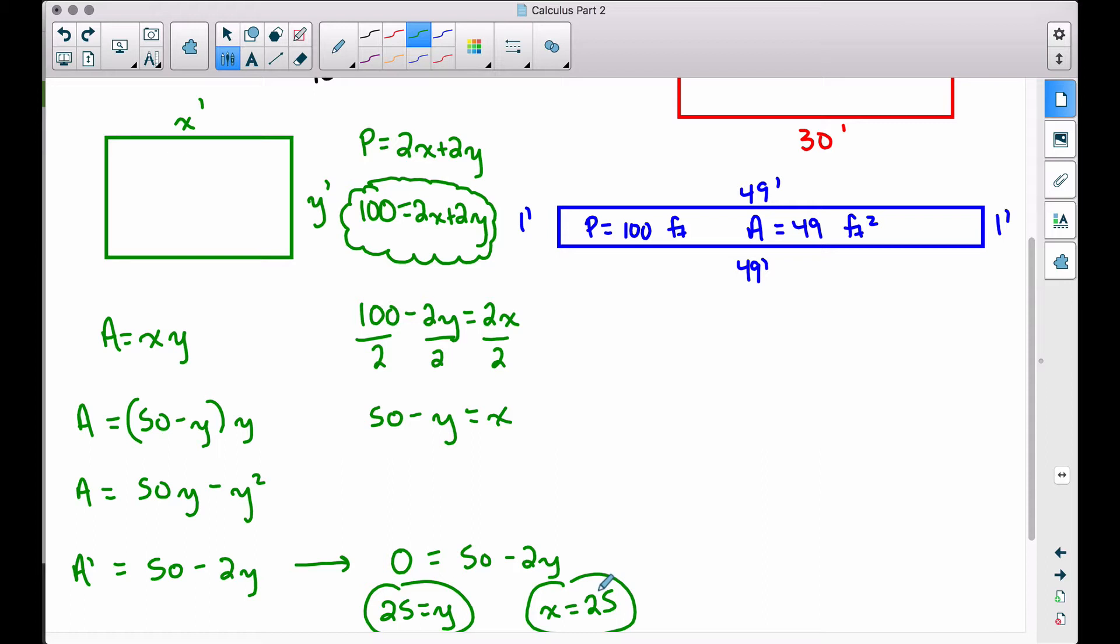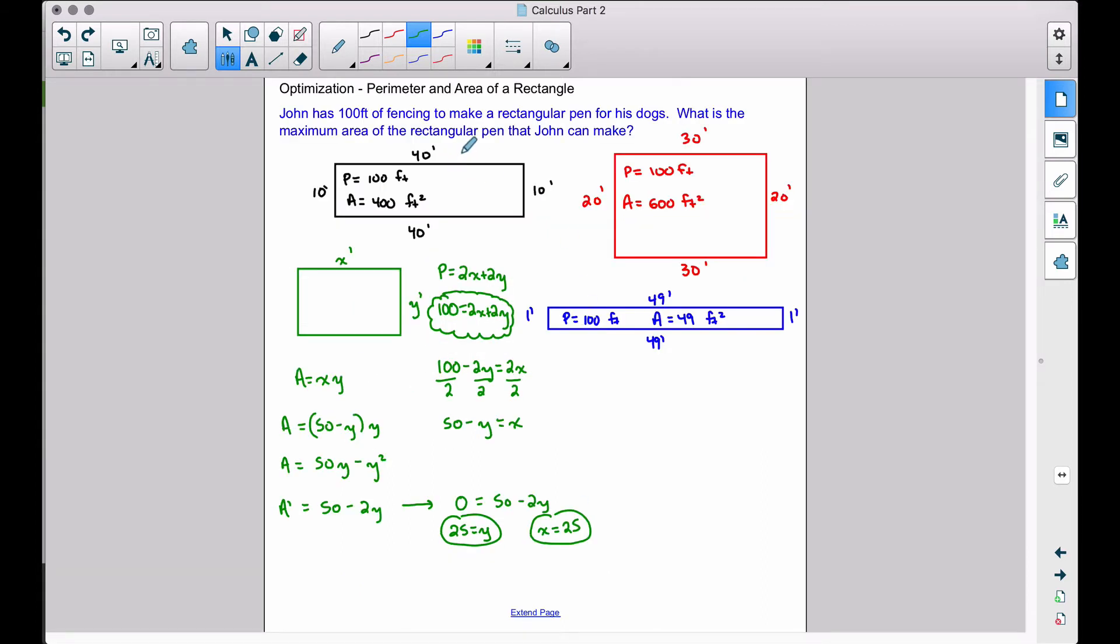Now let's make sure we answer the question. The question did not ask, what are the dimensions of the rectangular pen? The question says, what is the maximum area? And I gave this away at the very beginning of the problem. I said, the maximum area of a rectangle is actually going to end up being a square.